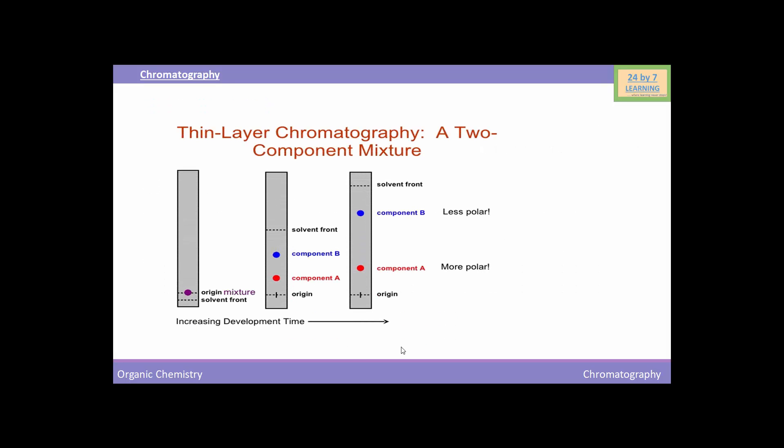You can understand this thin layer chromatography by this picture. You can see here this is the glass plate coated with a thin layer of silica gel, and this plate is spotted with a mixture of components. This is the spot of mixture of components, and then after spotting, this plate will be dipped in the jar containing solvent. After some time, solvent will rise above, and you can see as the solvent is rising in this plate, this is the solvent front.